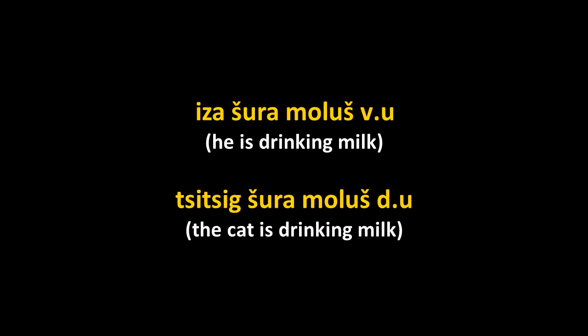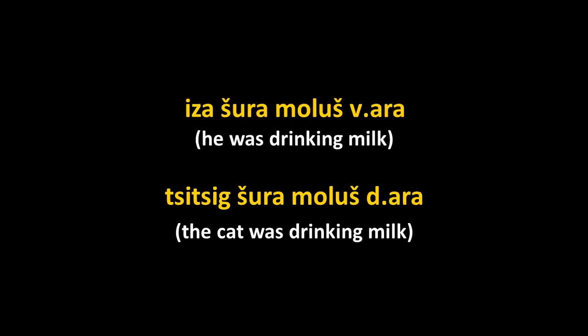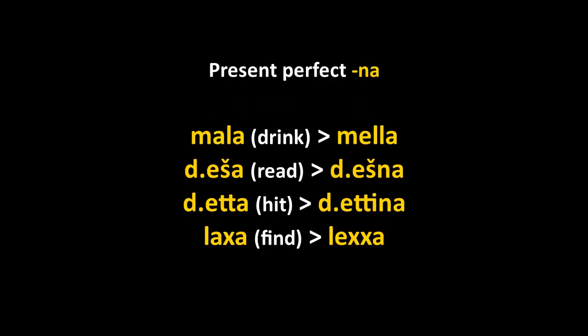For the past progressive 'he was drinking milk': isa shura molosh vara — you put the auxiliary verb in the past to get the past progressive. Tzitzig shura molosh dar — 'the cat was drinking milk.'